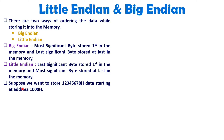Let us understand that with one example. I'm having one data: 0x12345678. We are storing that data with starting address 1000 hex. You should know how many bytes are there with this data. 1, 2 holds the 1st byte; 3, 4 holds the 2nd byte; 5, 6 holds the 3rd byte; and 7, 8 holds the 4th byte. So this data has a size of 4 bytes.